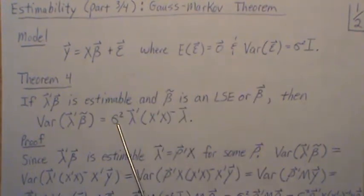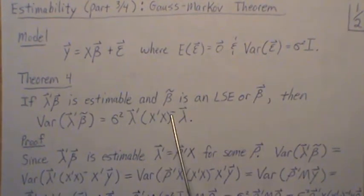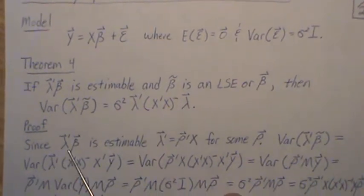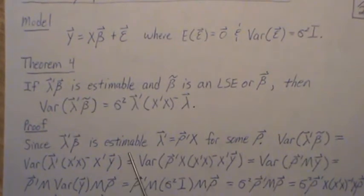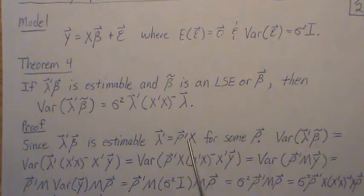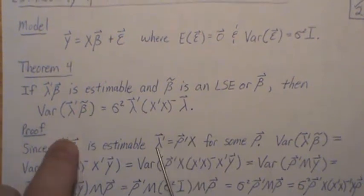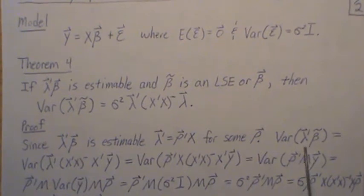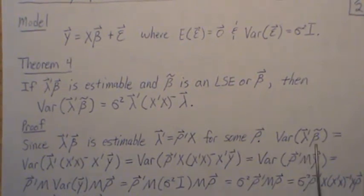The proof is: since lambda prime beta is estimable, by Theorem 1 a row exists such that taking a linear combination of the rows of the design matrix equals lambda for some row rho. So the variance of our least squares estimate becomes this.